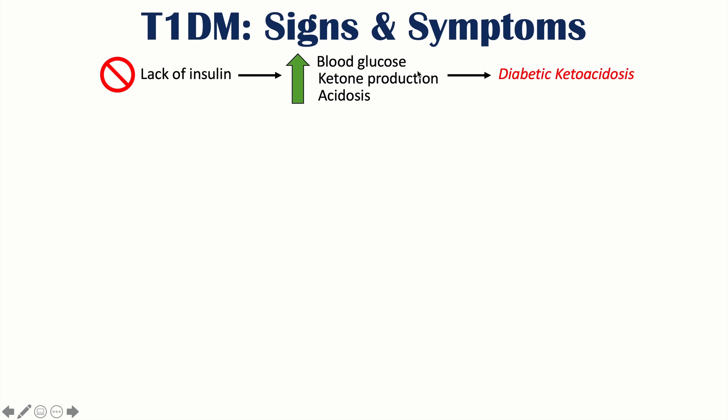These three elements — increased blood glucose, increased ketones, and acidosis — lead to diabetic ketoacidosis. It is called 'diabetic' because of increased blood glucose, 'keto' because of increased ketone production, and 'acidosis' because the blood is acidotic. DKA often presents as the initial issue in type 1 diabetic patients, and it shares symptoms already discussed, such as polyuria, polydipsia, and fatigue.